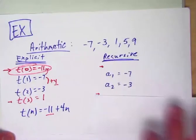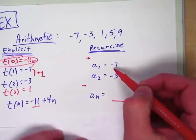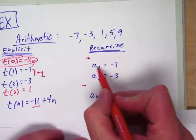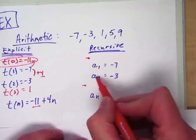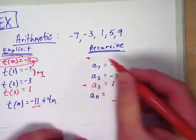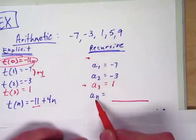Let's take a look at the recursive definition. The recursive definition is over here. It's the same exact numbers except we use a's instead of t of n. So a sub 1 means term number 1 is negative 7. Term 2 is negative 3. Term 3 is 1. We can see it in this pattern.